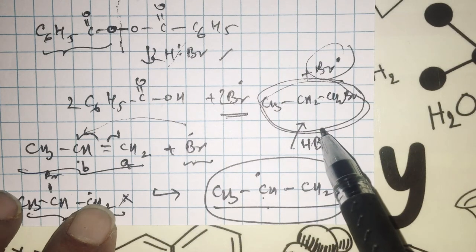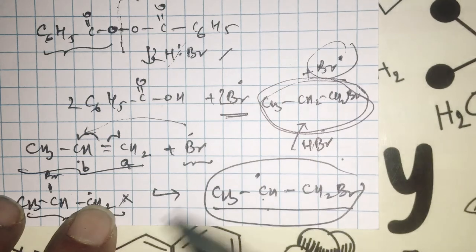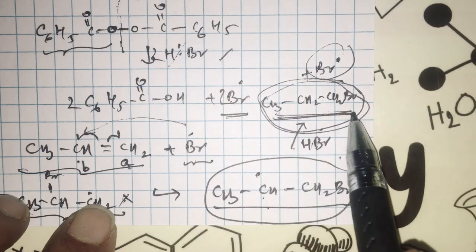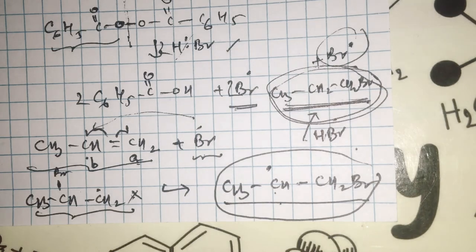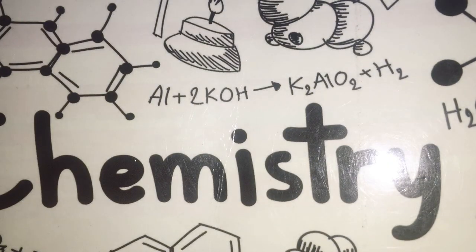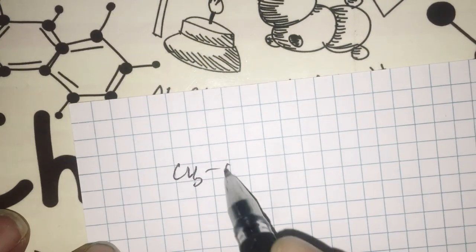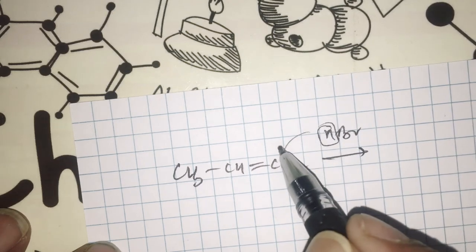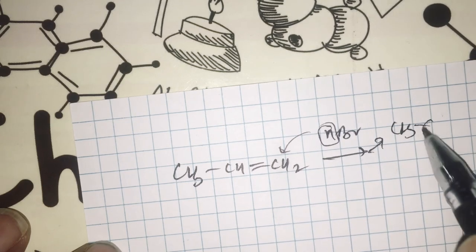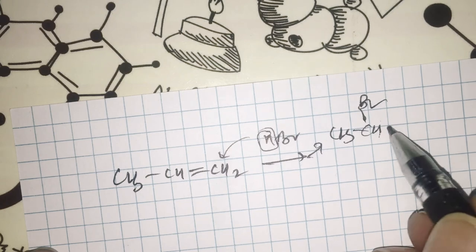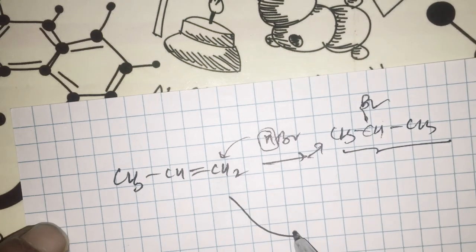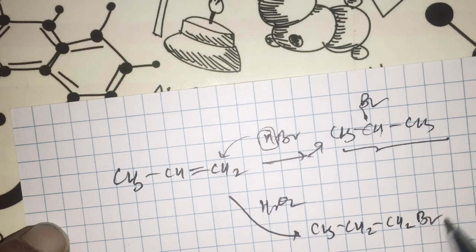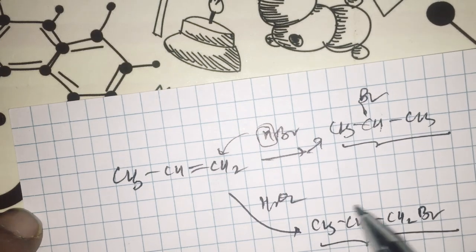This product is 100% opposite to the major product when there is no peroxide. Hence, this effect is known as Karash effect because it was discovered originally by Karash in the 1930s, or it is known as peroxide effect. Sometimes it is also called anti-Markovnikov rule. For Markovnikov rule, when HBr is added to an asymmetric alkene, hydrogen goes to the carbon which has more hydrogens, giving CH3CHBrCH3. However, if there is peroxide, the major product is exactly opposite to Markovnikov prediction - it is 1-bromopropane.